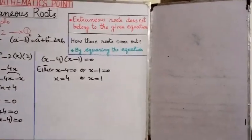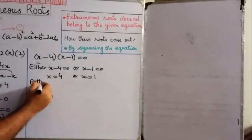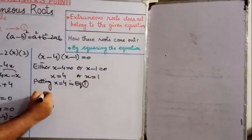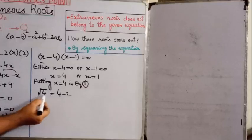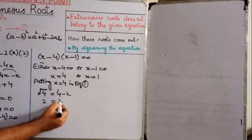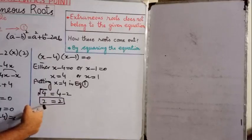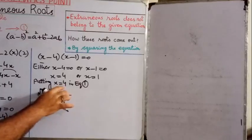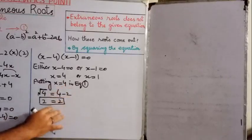By putting x equals 4 in equation number 1, we have square root of 4 equals 4 minus 2. The square root of 4 is 2, and 4 minus 2 is also 2. The left hand side equals 2 and the right hand side equals 2 — both sides match, so x equals 4 satisfies the given equation and will become part of the solution set.